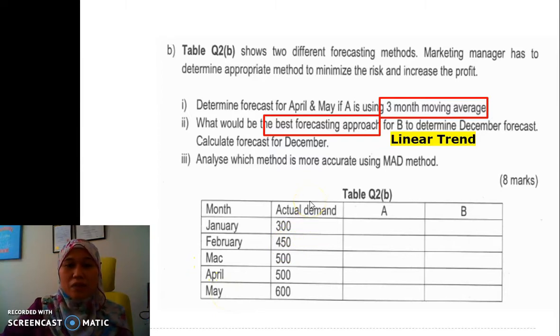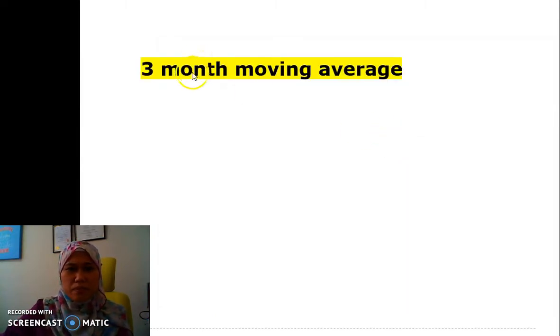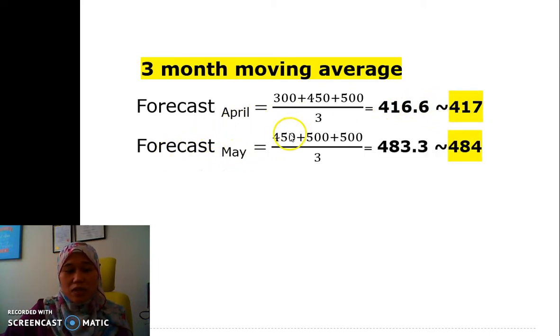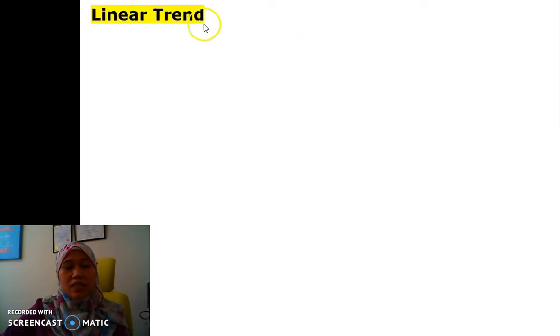These are the months we have until May, and then these are the demand. For three-month moving average, it's very simple. For the forecast, we are using the information for March, February, and January, divide by three, so we get 416.6, which we need to round up to 417. For the May forecast, we're using the April, March, February data divided by three, so we get 483.3, which we need to round up to 484.